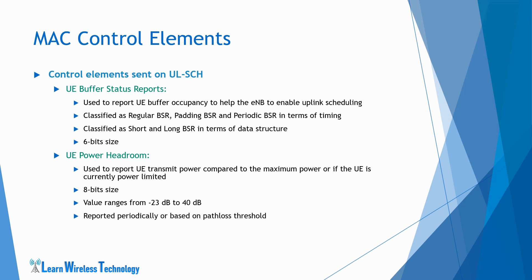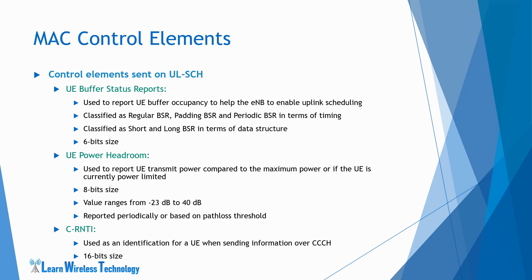Power headroom is reported periodically or based on a path loss threshold. The path loss is calculated based on the measured reference signal power, and if this value changes over a certain threshold, the UE reports the power headroom. The third uplink control element is CRNTI, used as an identification for a UE when sending information over the common control channel. CRNTI is assigned to the UE by the network during the RACH procedure. It is a temporary identity which becomes permanent upon contention resolution. The size of CRNTI is 16 bits. The UE sends CRNTI as a MAC control element, and the network addresses the UE using this CRNTI for providing uplink grants or transferring downlink data.